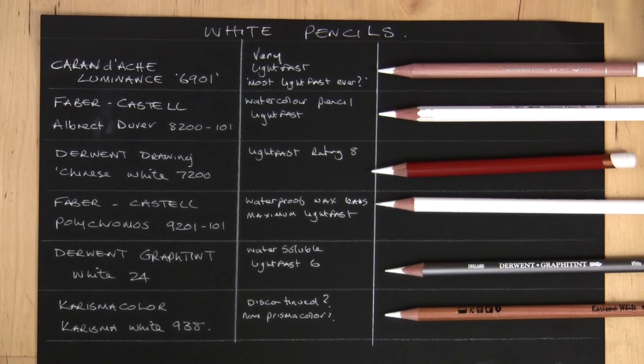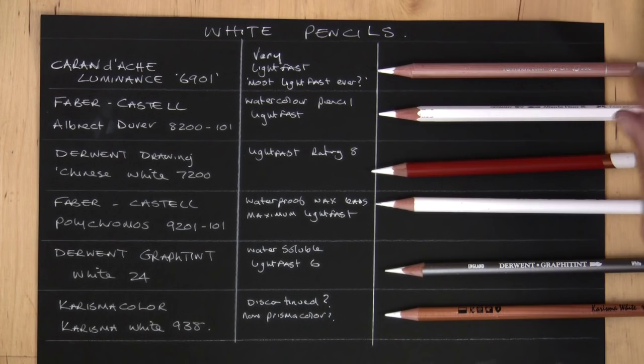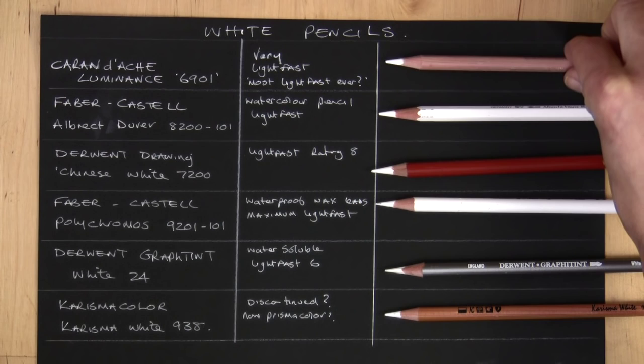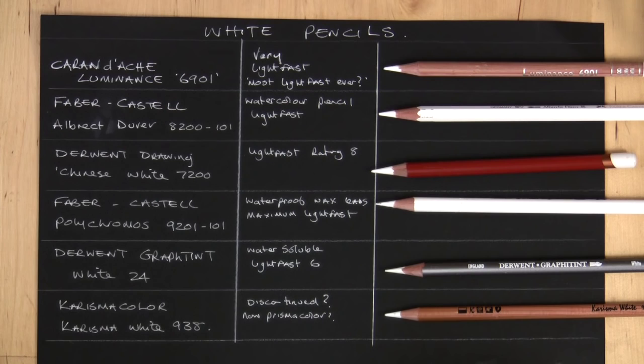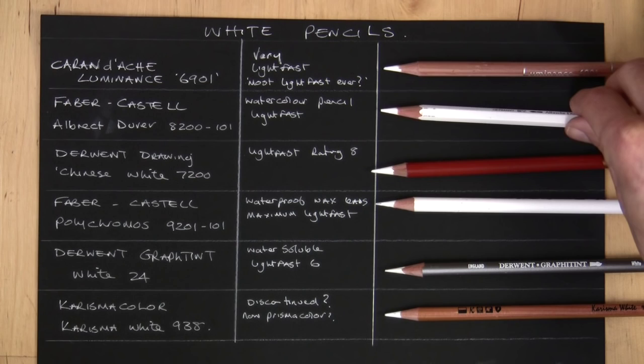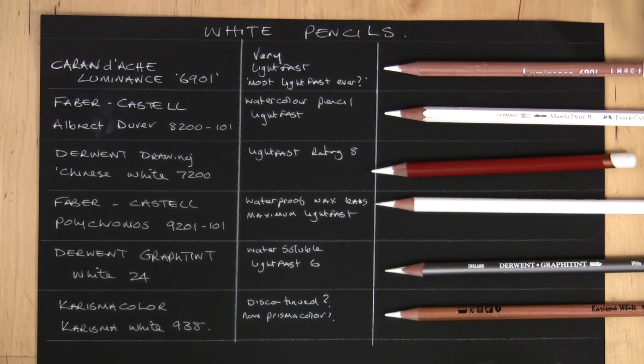So the pencils we've got, they're all the top ones and I've got quite a range there. I've got Caran d'Ache Luminance at the top, so that's very light fast and they claim it's the most light fast white pencil ever. Next down I've got Faber-Castell Albrecht Dürer 8200-101. That's a watercolor pencil but I've tried all different types so we get a good view of them.